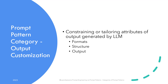Output customization category — as the name suggests, this category of patterns focuses on constraining or tailoring the types, format, structure, or other properties of the output generated by the large language model. I'll avoid discussing individual patterns here since they might confuse you at this stage.